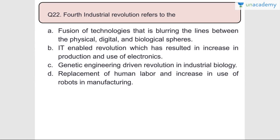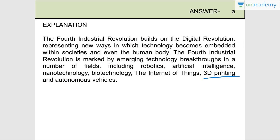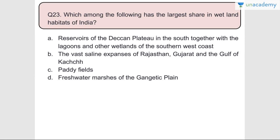Question number twenty-two: The fourth industrial revolution refers to the fusion of technologies that is blurring the lines between the physical, digital, and biological spheres. The fourth industrial revolution builds on the digital revolution, representing new ways in which technology becomes embedded within societies and even the human body. It is marked by emerging technology breakthroughs in robotics, artificial intelligence, nanotech, biotech, the Internet of Things, 3D printing, autonomous vehicles, and so forth.